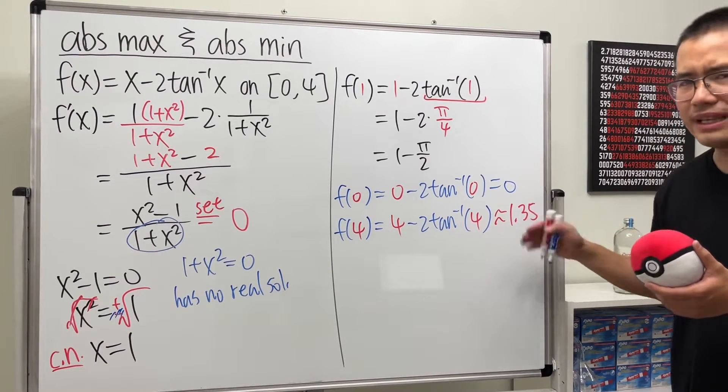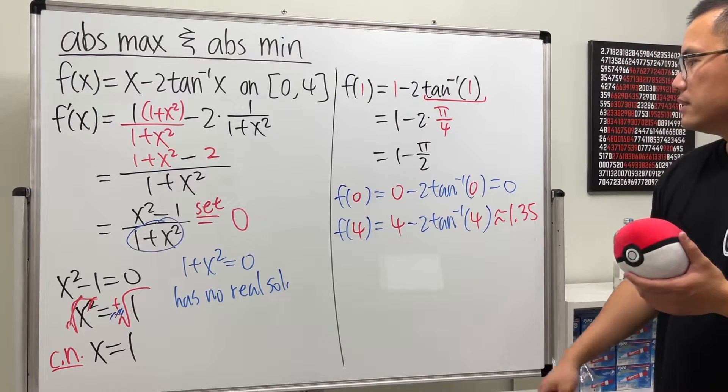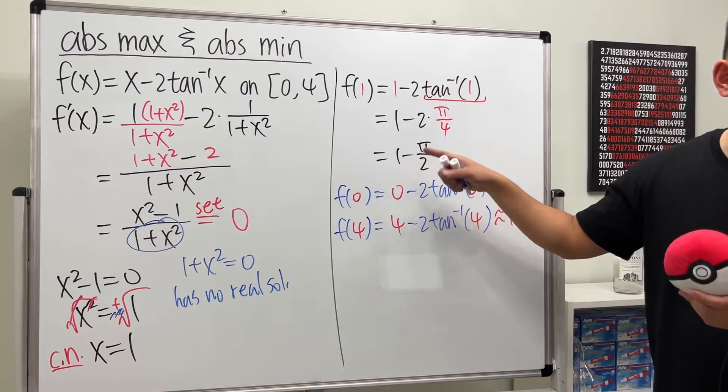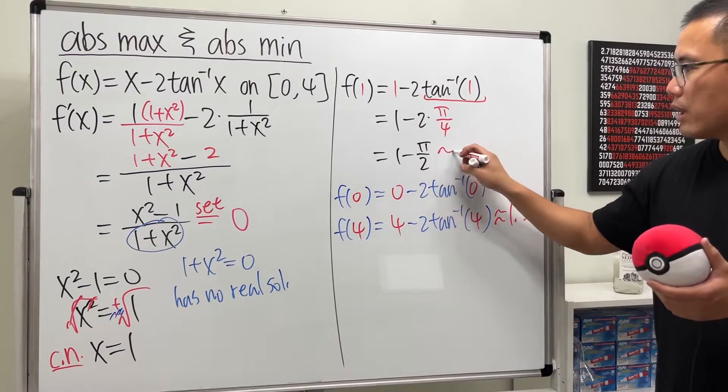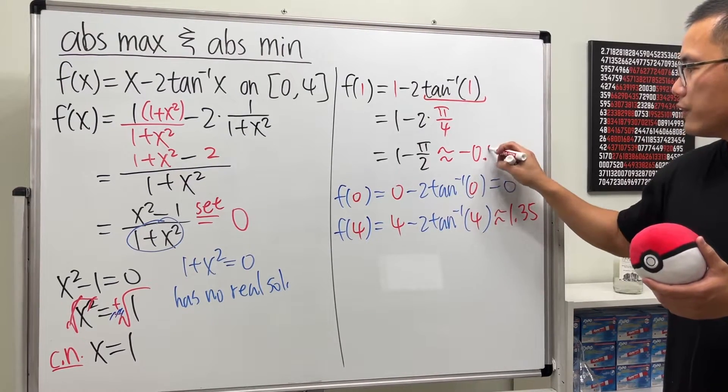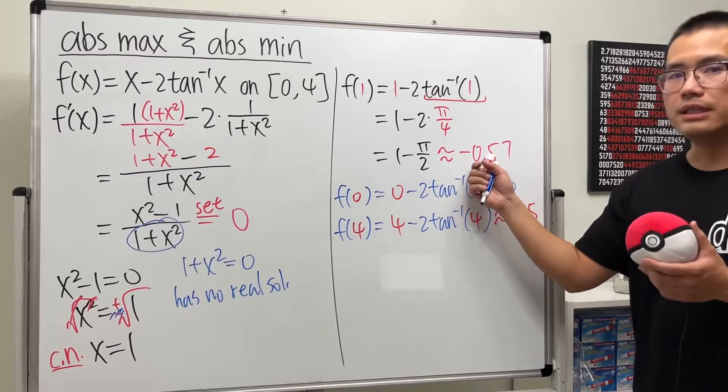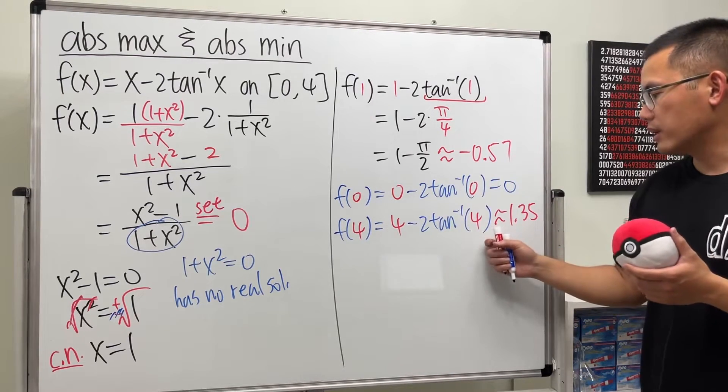1.348, but I can round up. Because this right here, we know as we discussed earlier, it's negative. And I will tell you, it's approximately negative 0.57. So this is, in fact, the smallest. And this right here will be the biggest. So here we go.